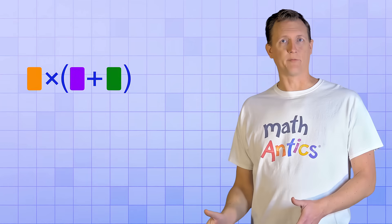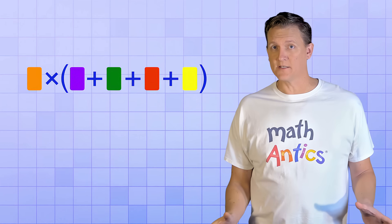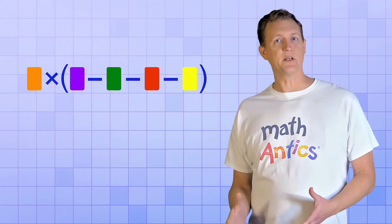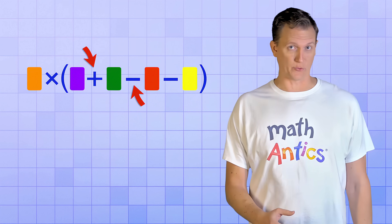So the Distributive Property works for groups of any size, and it works the same for group members that are being added or subtracted, even if there's a mixture of addition and subtraction in the group.